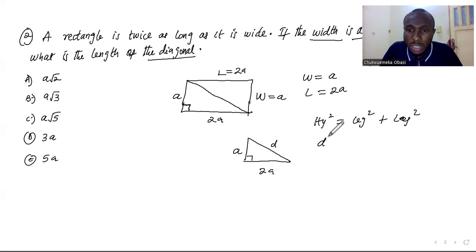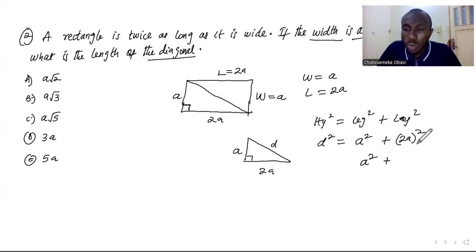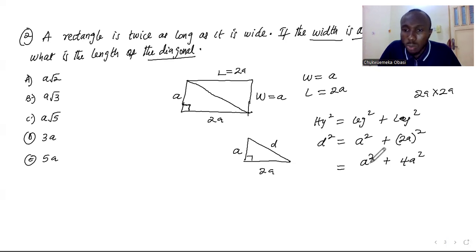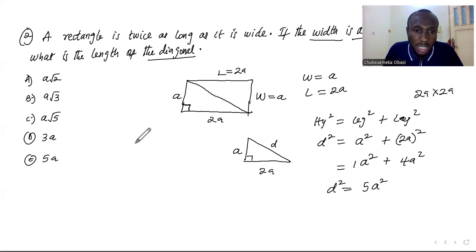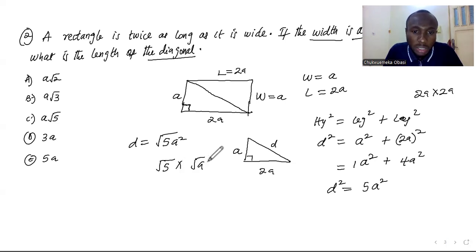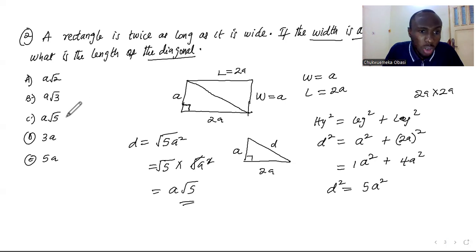The hypotenuse is D, so D squared equals A squared plus (2A) squared. Now (2A) squared is 2A times 2A, which is 4A squared. So we have A squared plus 4A squared, which is 5A squared. Therefore D squared equals 5A squared, meaning D equals the square root of 5A squared. That can be written as the square root of 5 times the square root of A squared. The square root and the square cancel out for A, so D equals A times the square root of 5, which is option C.